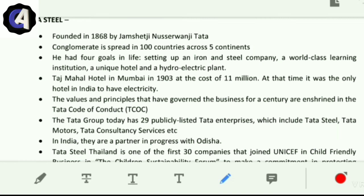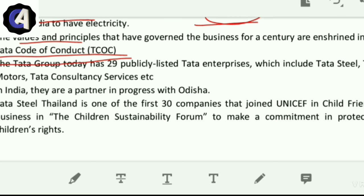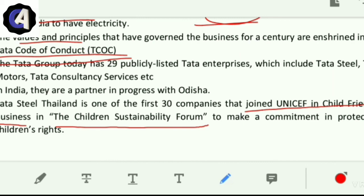First case study is Tata Steel, which was founded in 1868 by Jamshetji Nusserwanji Tata. It is a conglomerate spread over 100 countries. Jamshetji had four goals in life: set up an iron and steel company which he did, a world-class learning institution, a unique hotel, and a hydroelectric plant. He set up the unique Taj Mahal Hotel in Mumbai Colaba at a cost of 11 million at that time. Tata's values and principles are written in the Tata Code of Conduct. It has right now 29 publicly listed companies and they have joined UNICEF in child-friendly business in the children's sustainability forum. All this is mentioned because it is a well-managed company.